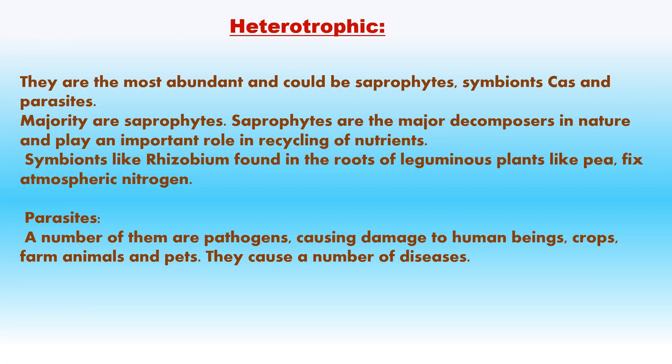Heterotrophic bacteria are the most abundant and could be saprophytes, symbionts, or parasites. Majority are saprophytes — the major decomposers in nature playing an important role in recycling of nutrients. Symbionts like Rhizobium, found in the roots of leguminous plants like pea, fix atmospheric nitrogen. Parasites — a number of them are pathogens causing damage to human beings, crops, farm animals and pets.